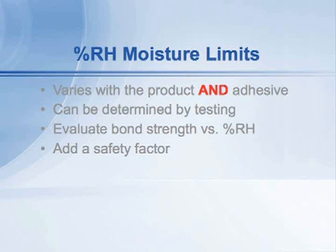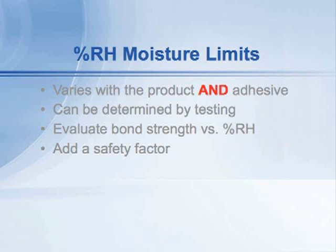So in summary, the relative humidity limit for an adhesive in a floor covering system will vary with the product — the flooring product and the particular adhesive. Vinyl composition tile will perform differently depending upon the adhesive used, and various adhesives may be suitable at different moisture levels for a particular flooring product. It can be determined scientifically through testing: we evaluate bond strength versus adhesive, add a safety factor, and come up with a tiered system of adhesives that are suitable for different floorings.